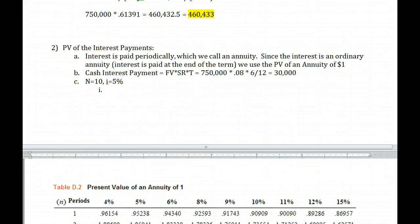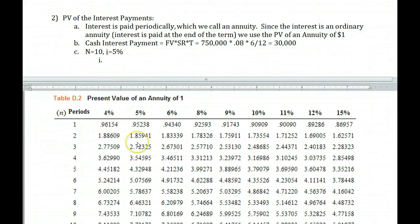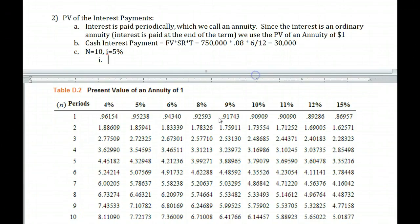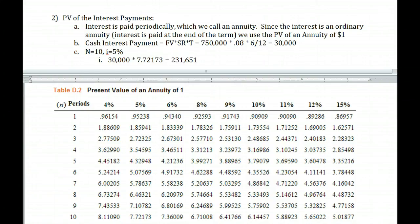Looking up 10 periods at 5% on the present value of an annuity of 1 table gives us the factor 7.72173. We always use the effective rate of interest. So we take the interest payment of $30,000 and multiply by 7.72173, giving us $231,651.90, which we round to $231,652.